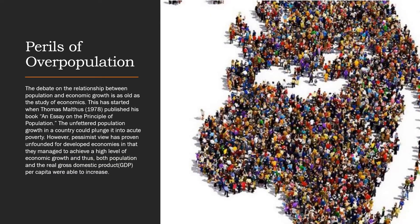Now we move to the perils of overpopulation. The debate on the relationship between population and economic growth is as old as the study of economics, starting when Thomas Malthus published his book An Essay on the Principle of Population. The unfettered population growth in a country could plunge it into acute poverty. However, this pessimist view proved unfounded in developed economies, which managed to achieve high economic growth where both population and real GDP per capita increased. Malthus predicted that by the mid-19th century, the world would inevitably exhaust its food supply.